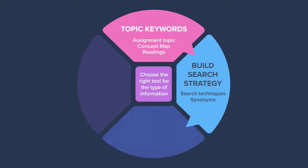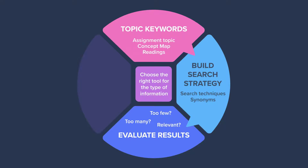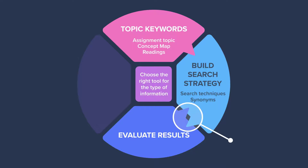Run your search and evaluate your results. Do you have too many and need to be more specific? Too few? Are the results not relevant for your topic? The information searching life cycle repeats the evaluation and refining step as many times as necessary. This allows you to refine and adapt your search strategy until your search produces what you are looking for.